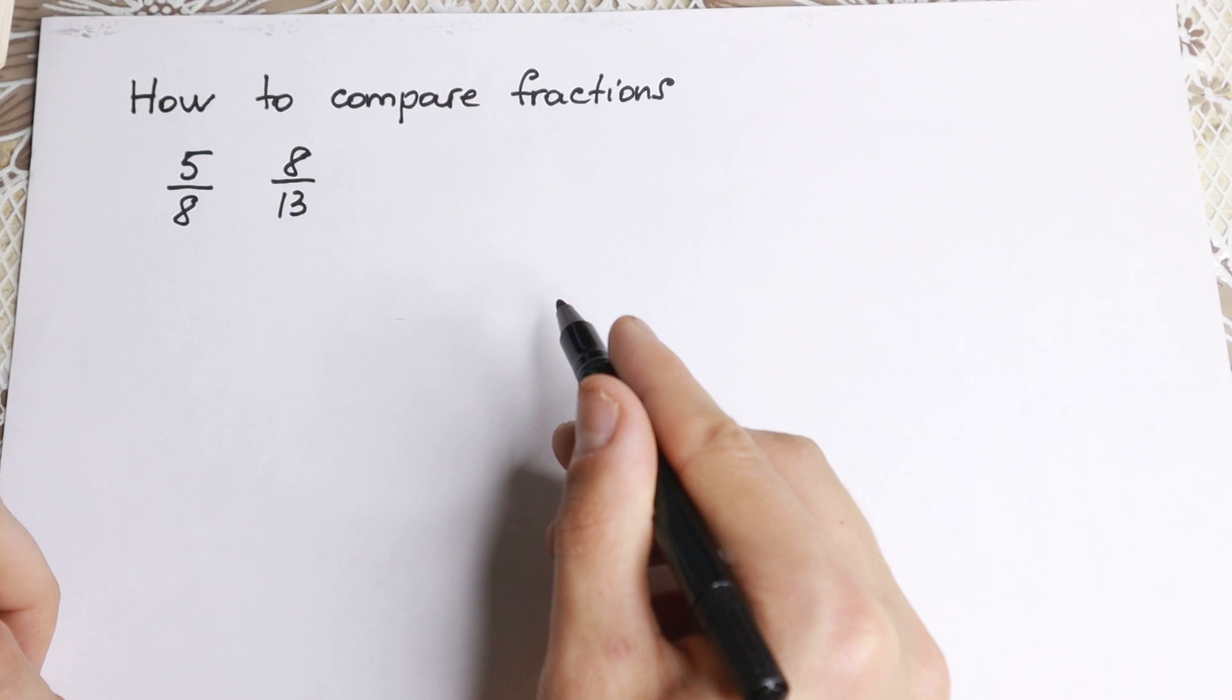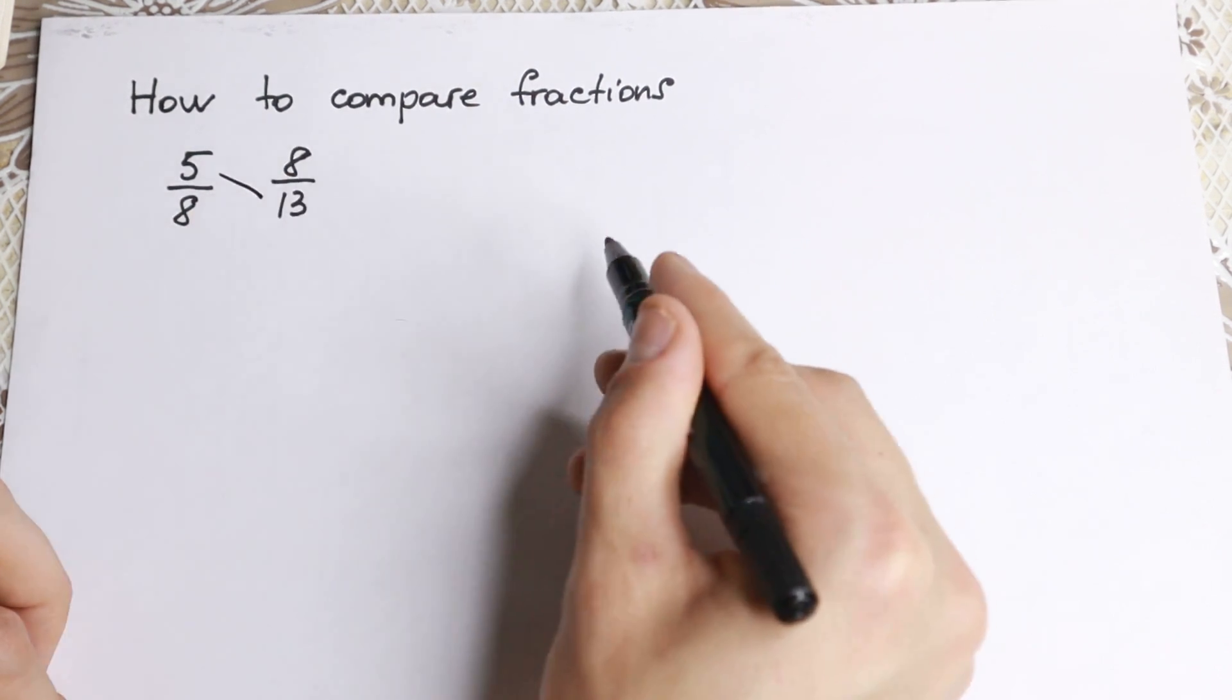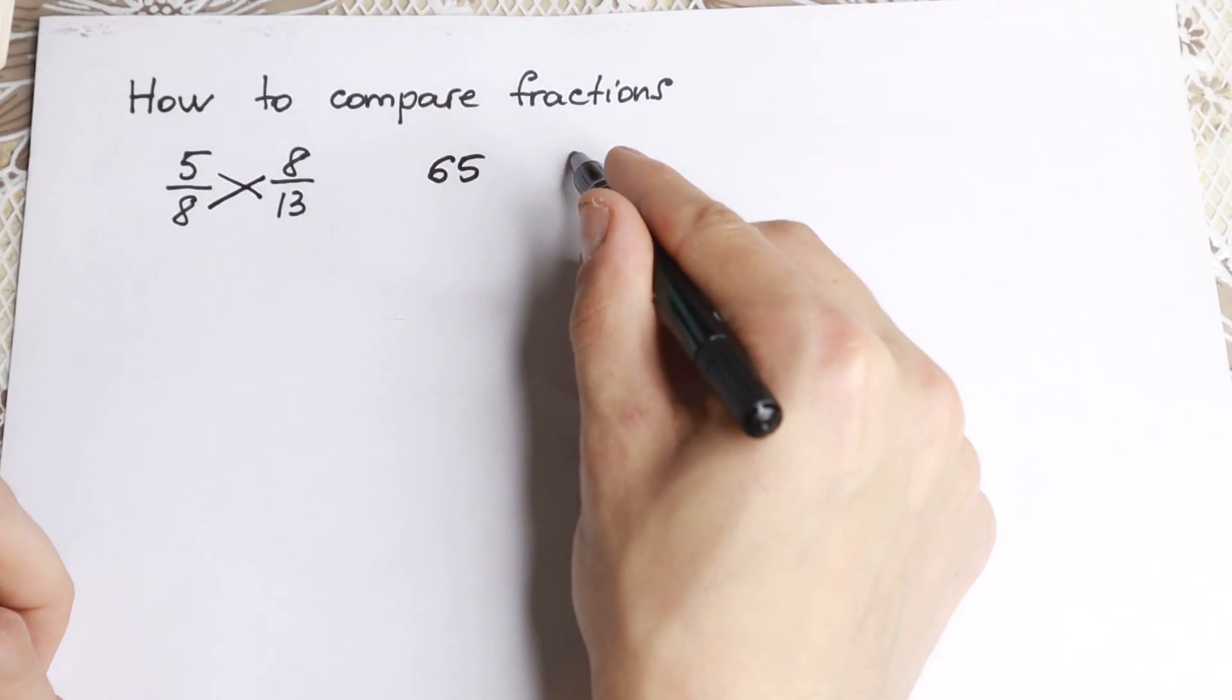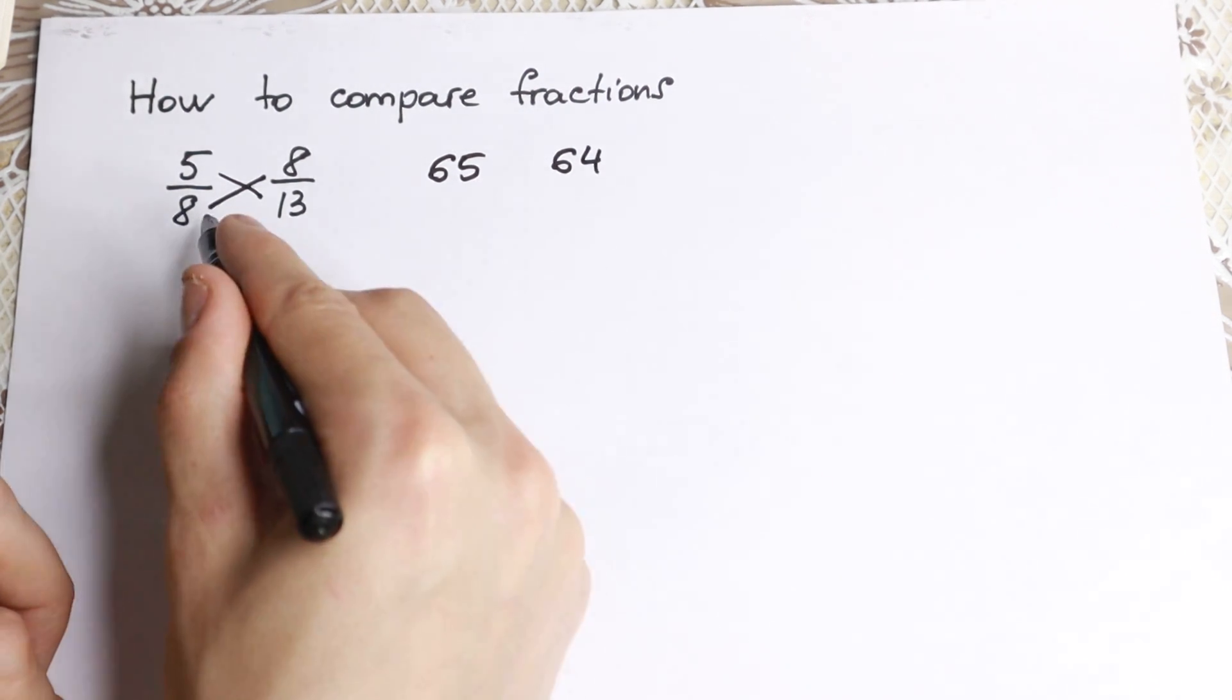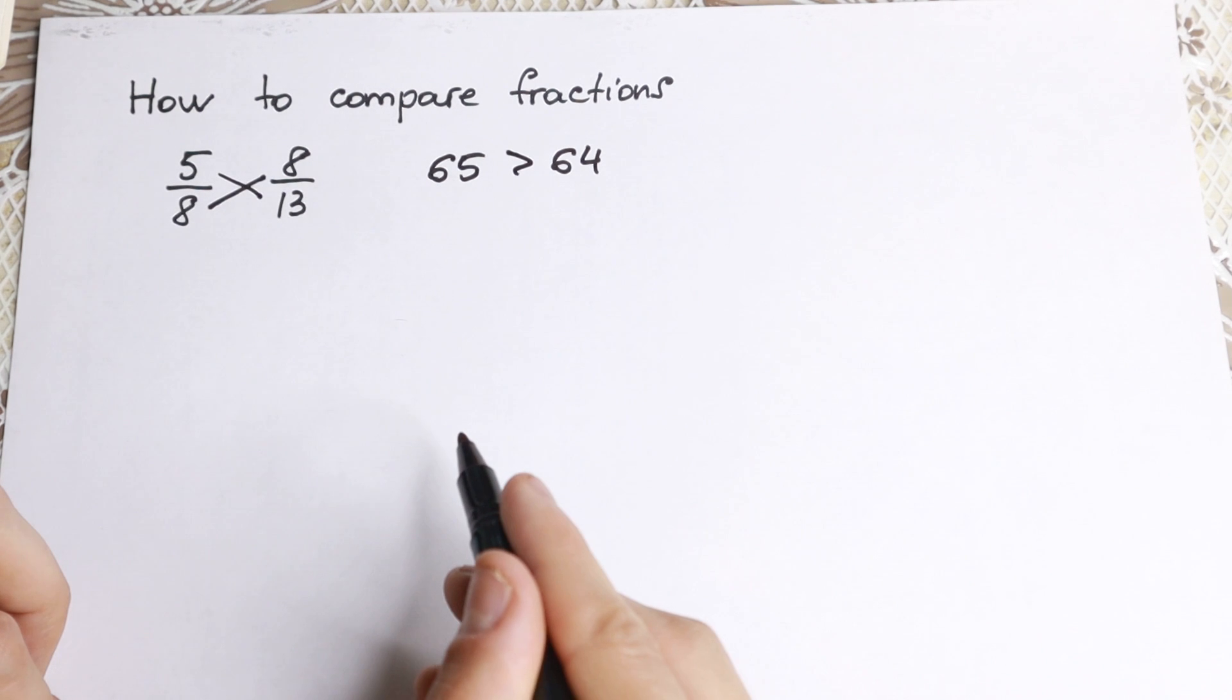How can we compare this? Let's cross-multiply. 5 times 13 we have 65, and 8 times 8 we have 64. So as you can see, this value on the left-hand side is greater. So this is the answer.